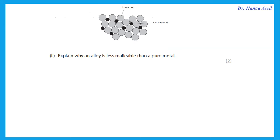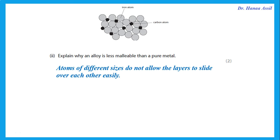Explain why an alloy is less malleable than a pure metal. If we are asked why we use alloys and not the pure metal, we say the alloy is stronger, harder, less malleable. This is because we have atoms of different sizes. A pure metal has regular rows of positive ions, but in an alloy, different-sized atoms prevent the layers from sliding over each other easily, which is why alloys are harder, stronger, and less malleable.